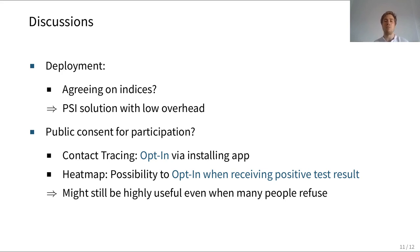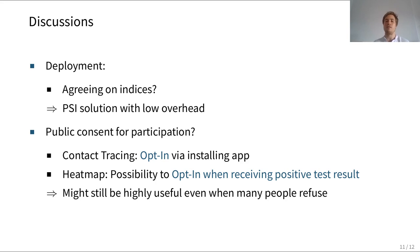Another consideration is that people might not want to be part of this computation. In the contact tracing approach, people who don't want to participate simply don't install the app — an opt-in approach. For our heat map protocol, we can also construct an opt-in solution by letting people decide to participate when they receive a positive test result — for example, confirming with their doctor or by replying to an email. We conjecture that our protocol is still useful even when only a small part of the population agrees to participate, and will still produce a useful heat map helping to track the spread of the disease.